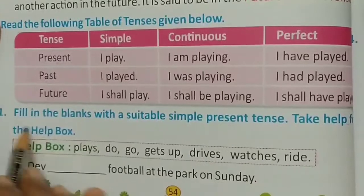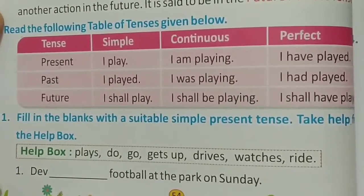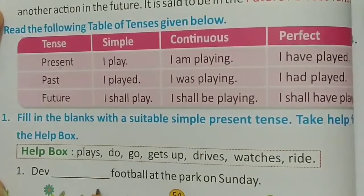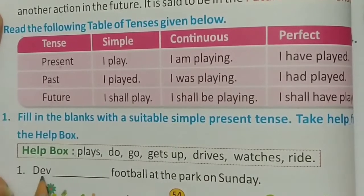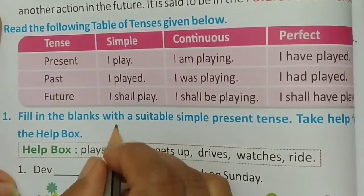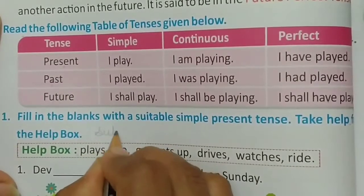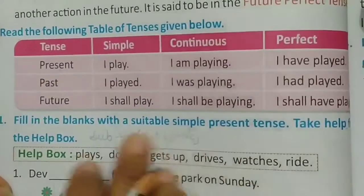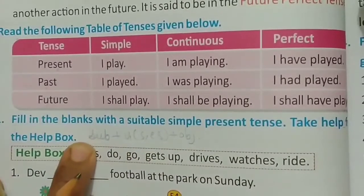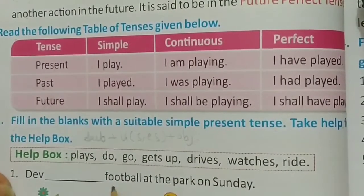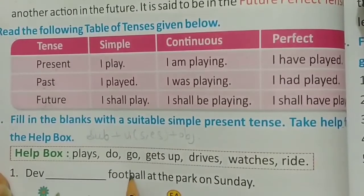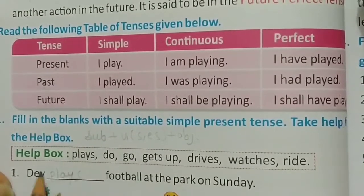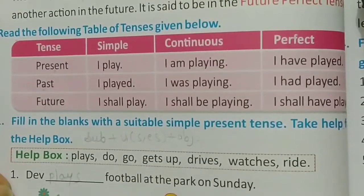Take help from the help box. According to simple present tense, with the help of these given words we have to fill in the blanks. The structure of the sentence is: subject plus V1 plus S or ES plus object. S or ES is used with the verb when the subject is singular. For example: 'They dash football at the park on Sunday.' Football kya karte hain? Play karte hain. So here we write: Dev plays football at the park on Sunday.